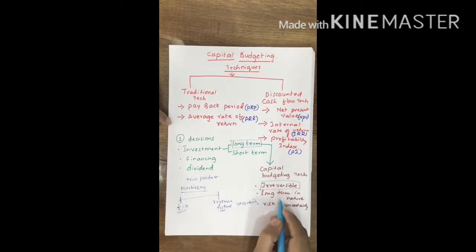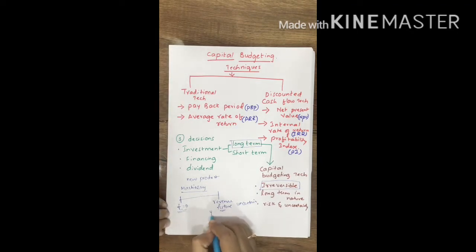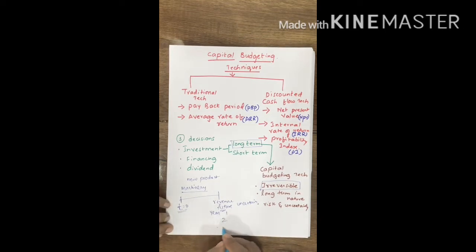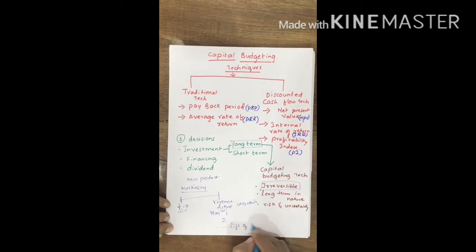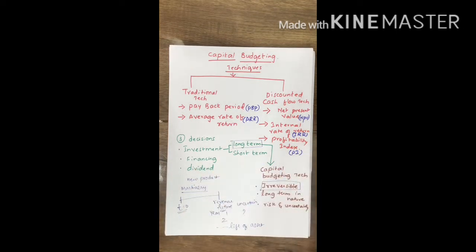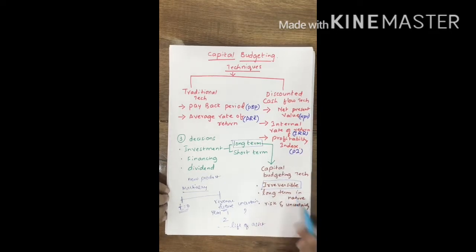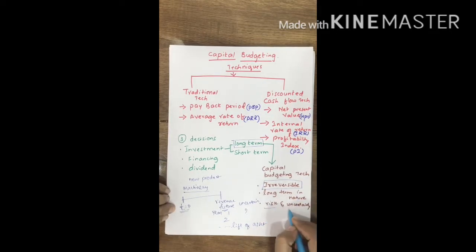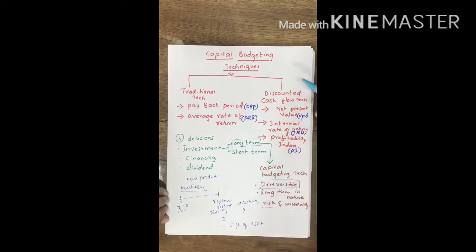They are long-term in nature — at the end of year one, you will generate some revenue; year two, some revenue; and so on up to the life of the asset. But how much revenue you will generate, you have to estimate that. As they are long-term in nature and high risk and uncertainty is associated with these investment proposals, we have to evaluate them using capital budgeting techniques.